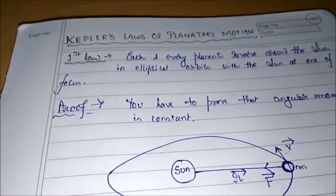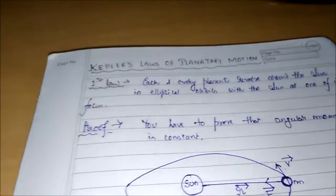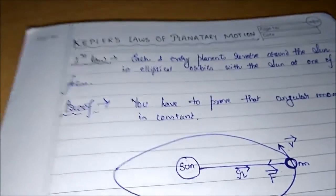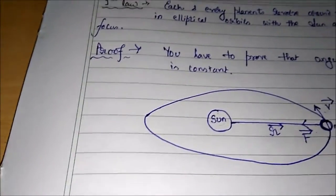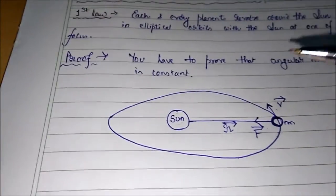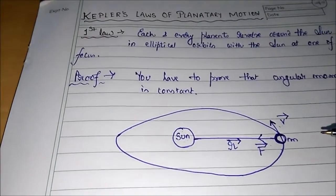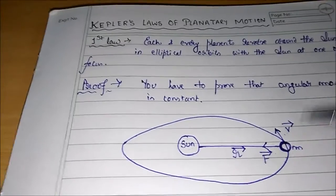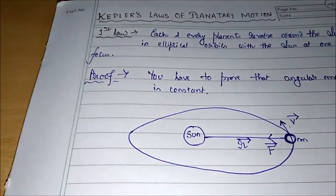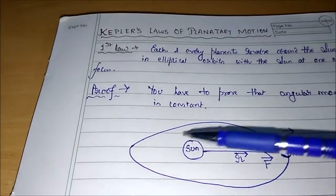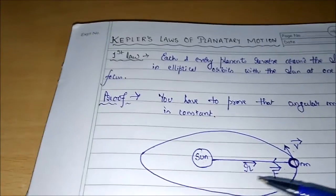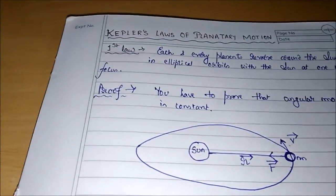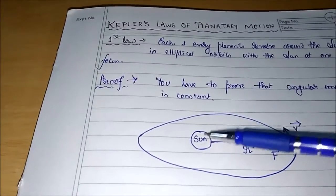The first law of Kepler states that each and every planet revolves around the Sun in elliptical orbits, with the Sun at one of its foci. Let's go to the diagram. Let's say the planet has a mass small m, is attracted towards the Sun with force F, and is revolving around the Sun with velocity V — remember, this is angular velocity. The mean distance between the Sun and the planet is R; this distance will change as the planet revolves, but the mean distance is R.